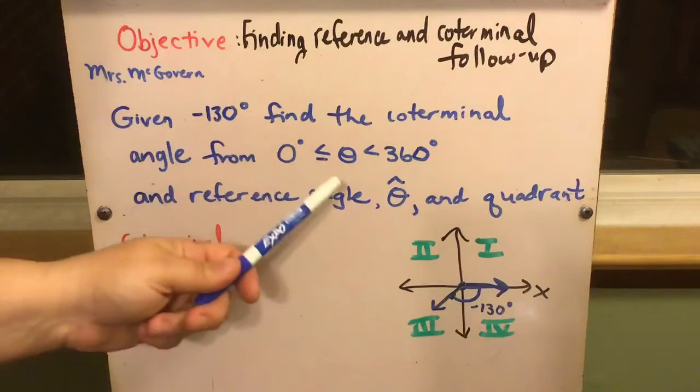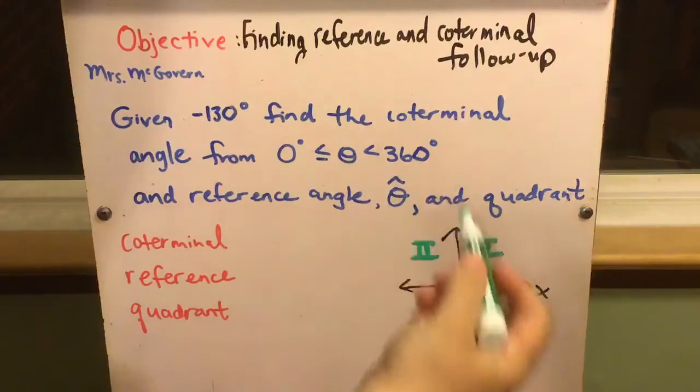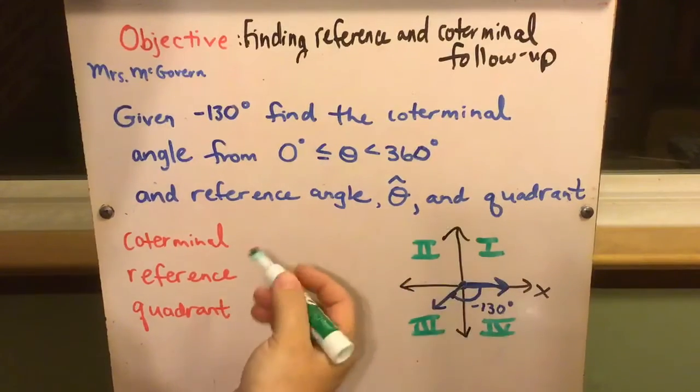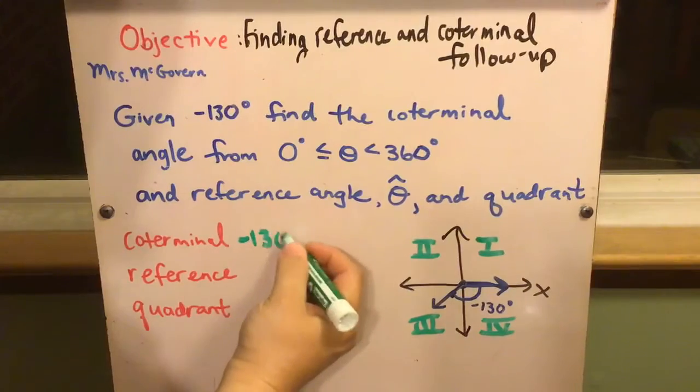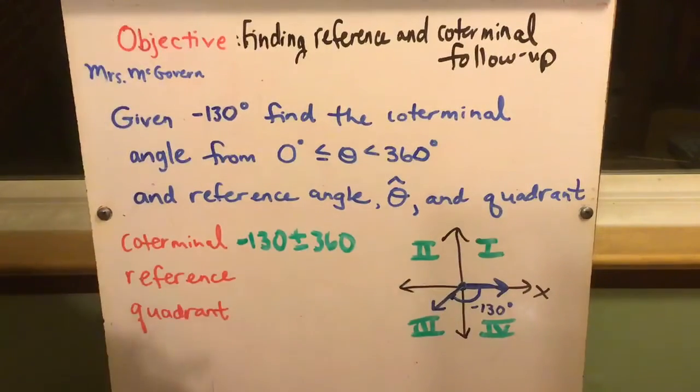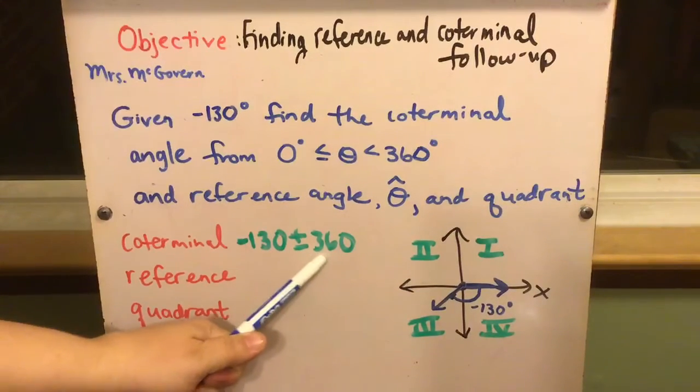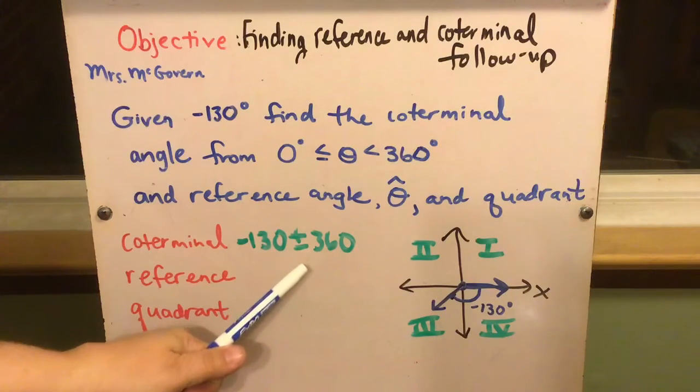It does say to find the coterminal, which we might as well just do that first. Coterminal starts and ends in the same spot just by rotating 360. So if you take your angle, negative 130, you either add or subtract 360 to get your answer. If you want to get more negative, you would subtract. If you want to get positive, you would add.